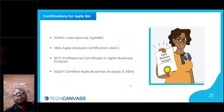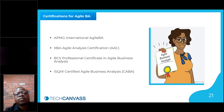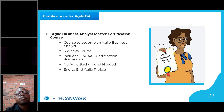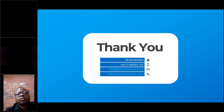That brings us to the end of the main presentation. There are different agile certifications you can opt for if interested in agile BA. Tech Canvas also provides an Agile Analysis Master certification course — a six-week course where the first two weeks cover basic agile foundation, and the next four weeks provide training on the AAC certification so you can appear for the exam. I'll now go through the chat box and address the questions.